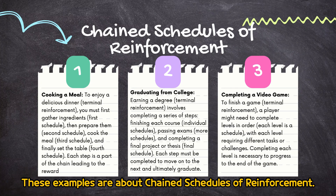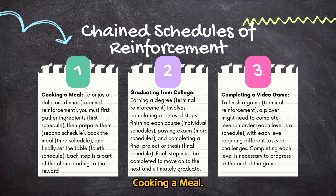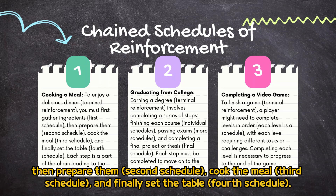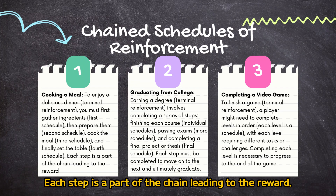These examples are about chain schedules of reinforcement. Cooking a meal: to enjoy a delicious dinner (terminal reinforcement), you must first gather ingredients (first schedule), then prepare them (second schedule), cook the meal (third schedule), and finally set the table (fourth schedule). Each step is a part of the chain leading to the reward.